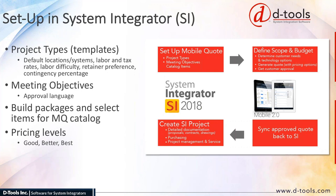You can set meeting objectives — we have default ones, but you can customize the approval language for each. Importantly, you'll want to build packages and select the items from your catalog that you want to share with Mobile Quote. You don't need to use packages — you can use allowances only — but packages make it a more powerful solution. You can also set your own pricing levels beyond the defaults.